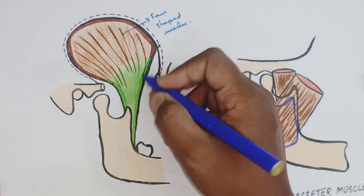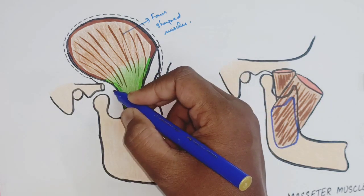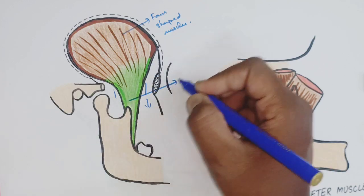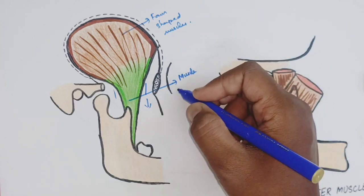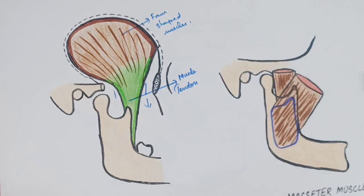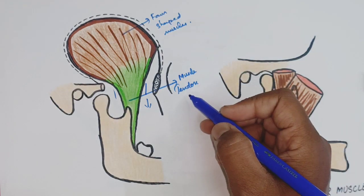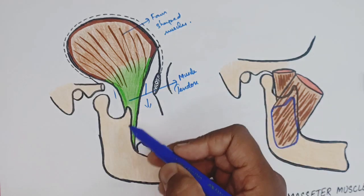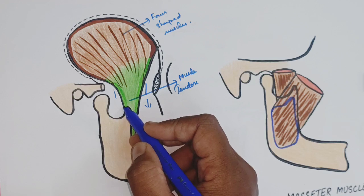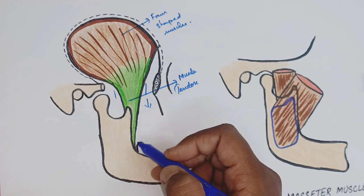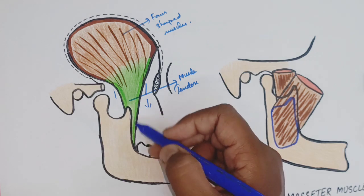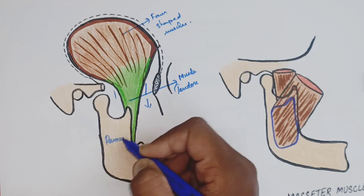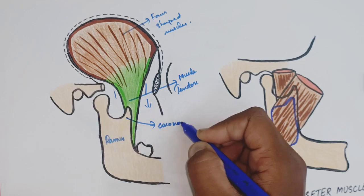The temporalis muscle arises from the temporal fossa floor — except the part formed by the zygomatic bone — and from the deeper surface of the temporal fascia. It converges to form a tendon, which descends downwards and passes through the gap between the zygomatic arch and the side of the skull, and is inserted into the medial surface, apex, and anterior border of the coronoid process of the ramus of the mandible.